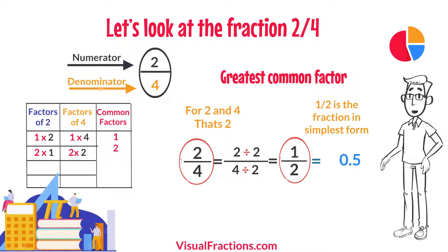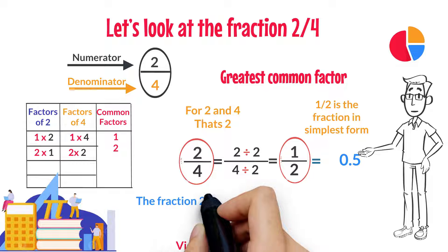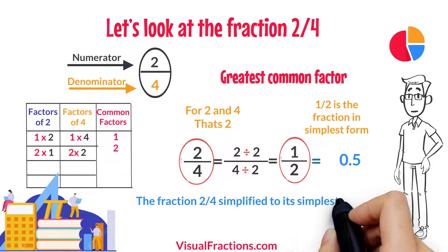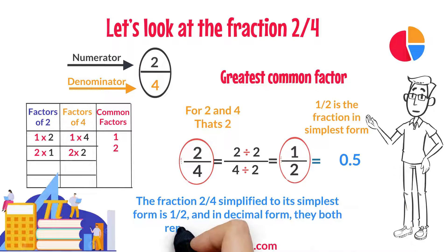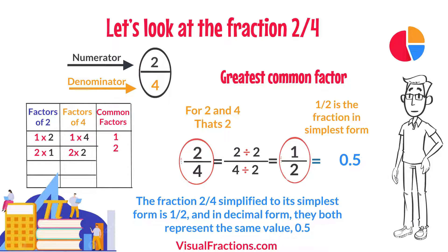So, there you have it. The fraction two quarters simplified to its simplest form is one half, and in decimal form, they both represent the same value, 0.5.